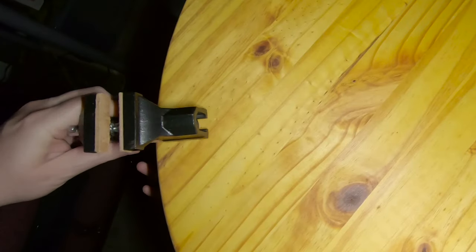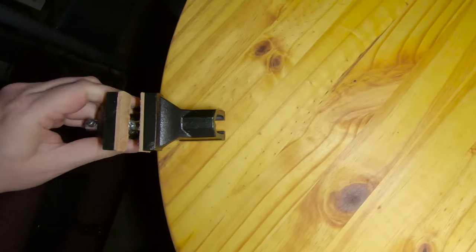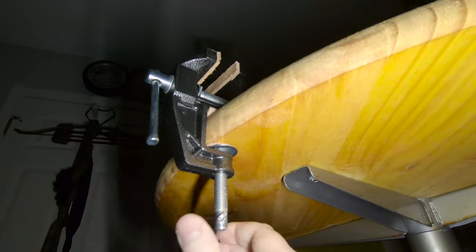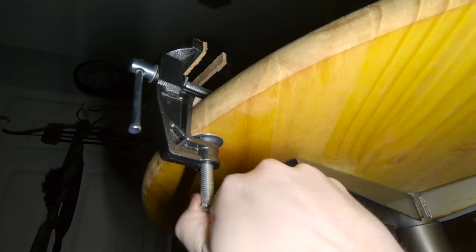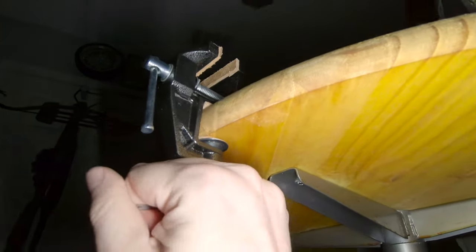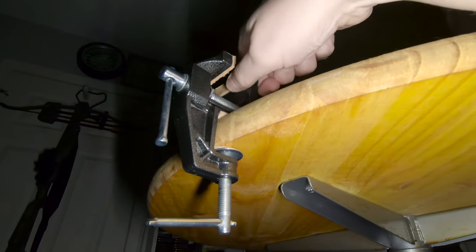The vice just slides onto the end of your table just like this, and of course you tighten it down. Real simple operation. And I find that I can get it plenty tight. I mean it's not going anywhere.